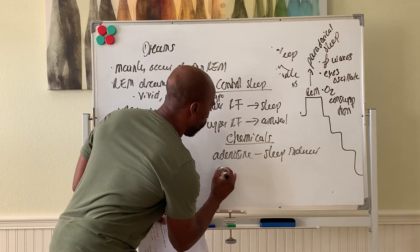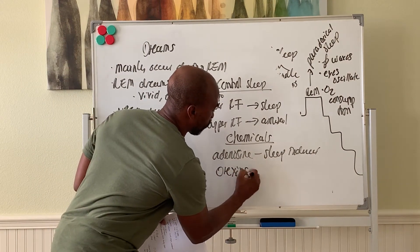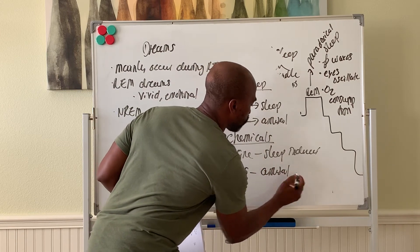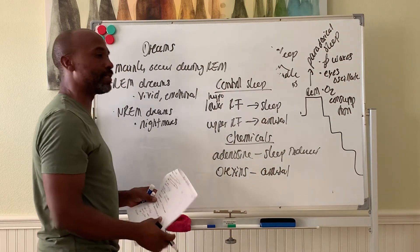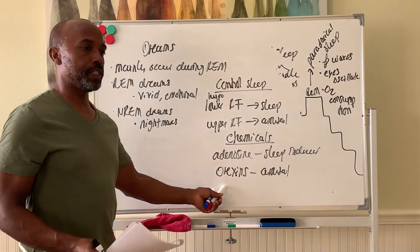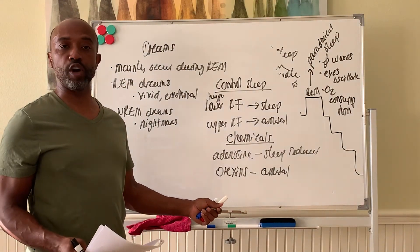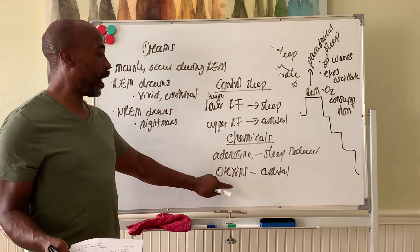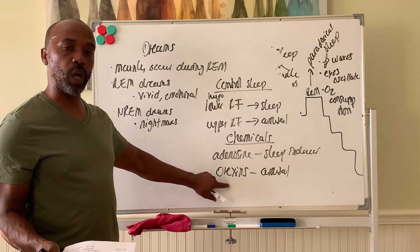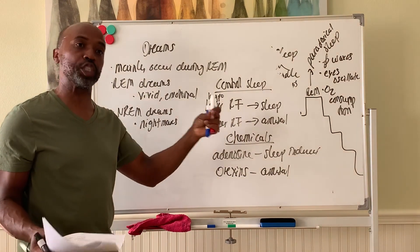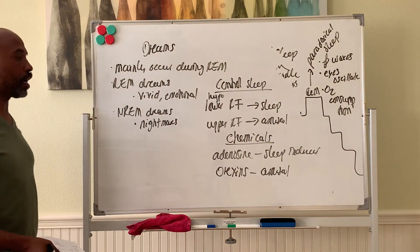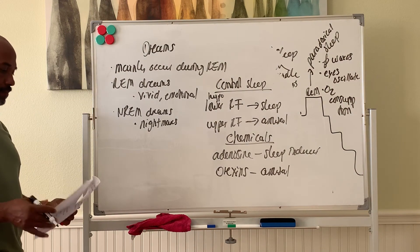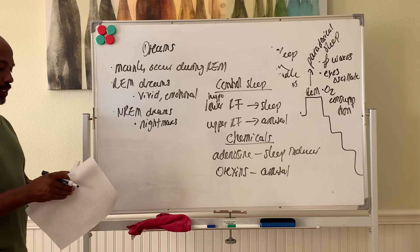There's also another chemical called orexin, two of them are called orexins. These are the ones that will arouse you. Arousal comes from these chemicals. When they're released in the brain, they wake you up. People who have narcolepsy, where they fall asleep at inappropriate times very quickly during the day especially, are lacking orexins in their body. They have low levels of orexin so they can't keep up. They can't switch to being awake. They're constantly in a sleeping state.